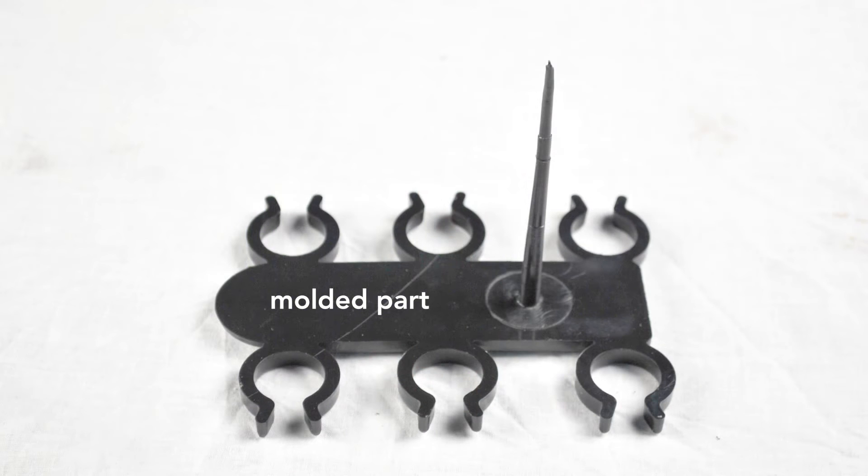When the part drops from the mold, an operator has to remove the sprue, that section of plastic that connected the injection unit to the mold. Sprues are manually twisted or cut off the part. Sprues are attached to objects only in molds that make a single part at a time, like a chair.